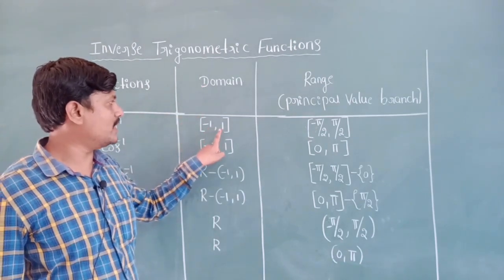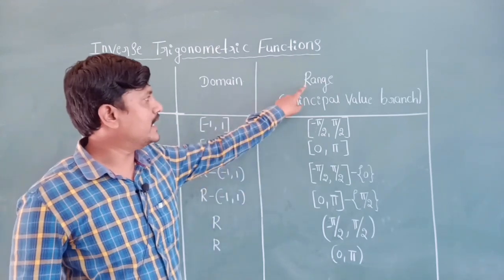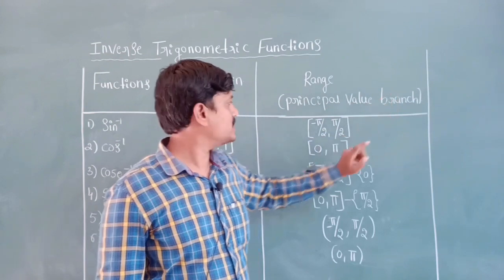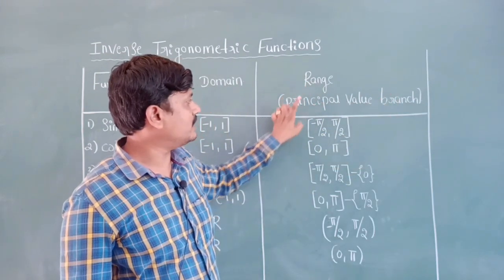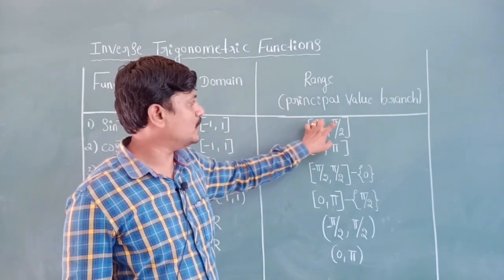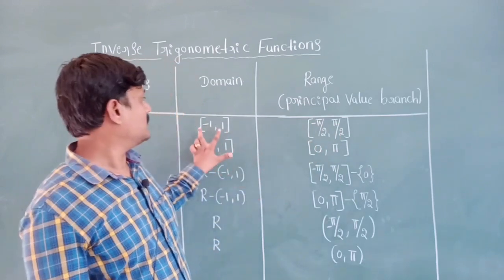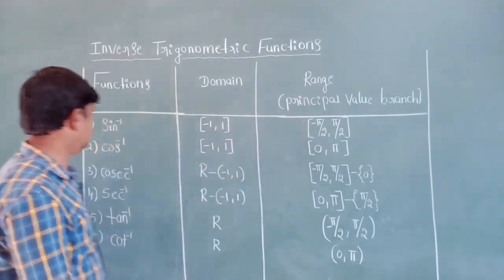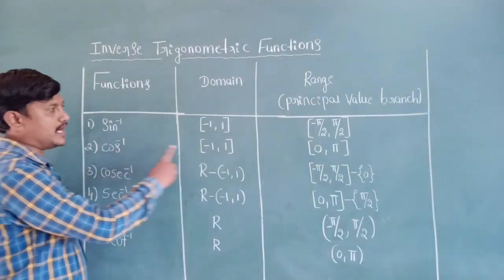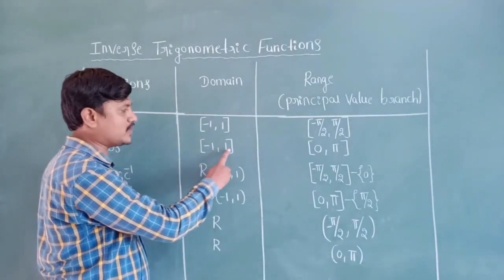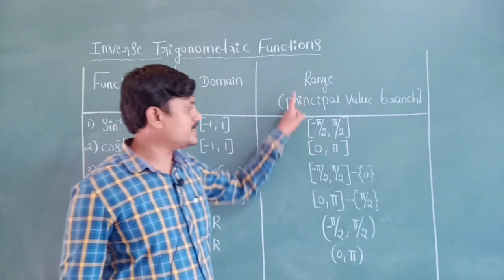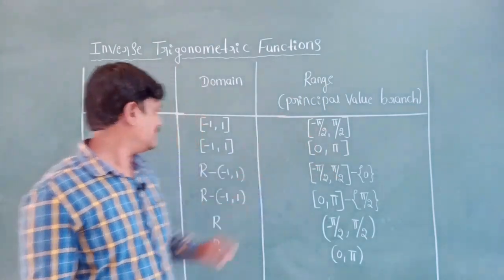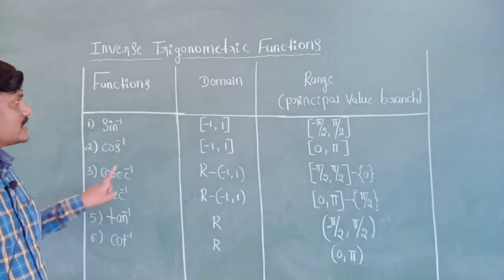First function: sine inverse. Domain is minus one comma one, and range — also called the principal value branch — is minus pi by two to pi by two. Both are closed intervals. Next, cos inverse: domain is also minus one comma one, and range is zero to pi, or zero to 180 degrees.